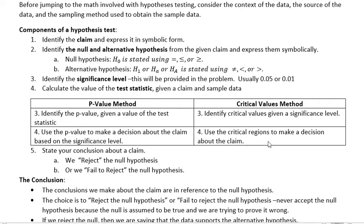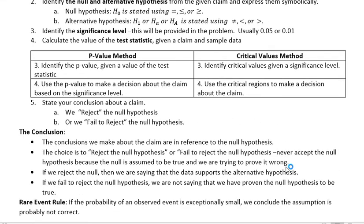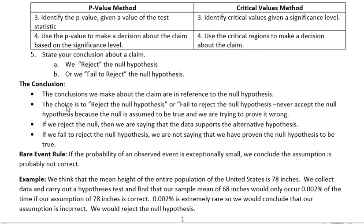Then we state the conclusion about the claim. When we state the conclusion, we either reject the null hypothesis or we fail to reject the null hypothesis. The conclusion we make is always in reference to the null hypothesis — the choice is to reject or fail to reject the null. Never accept the null hypothesis, because the null is assumed to be true and we're trying to prove it wrong. So we either say we proved it wrong, or we failed to prove it wrong.